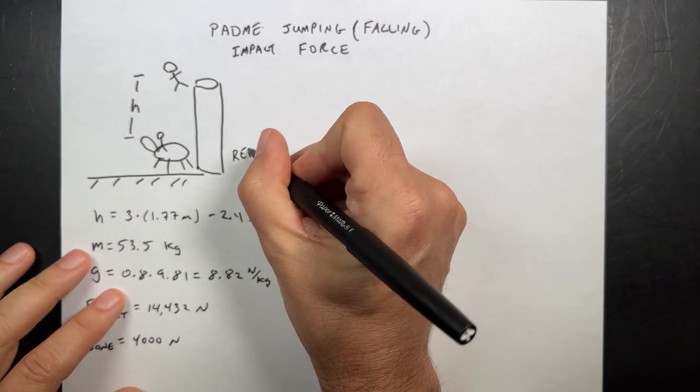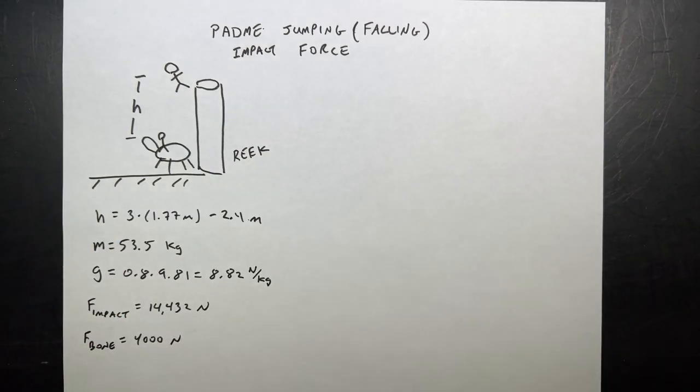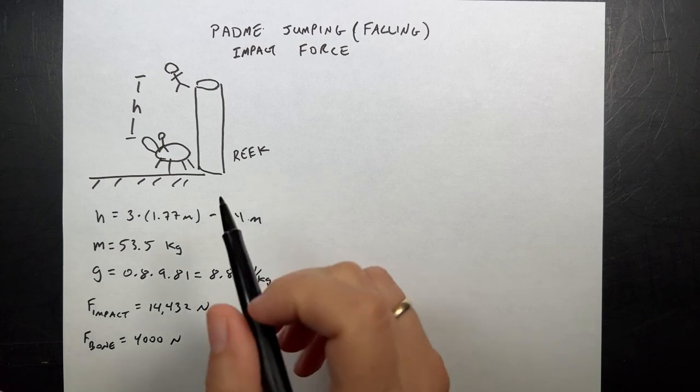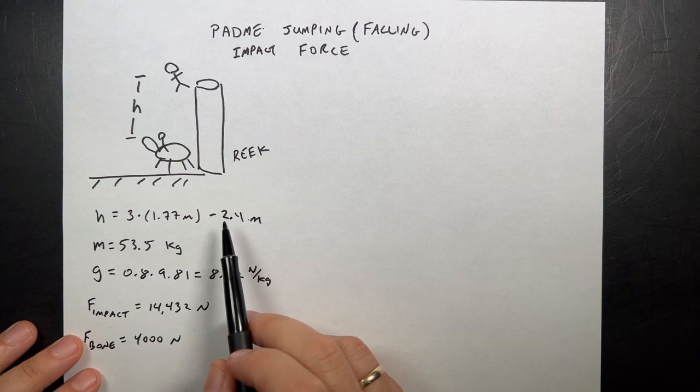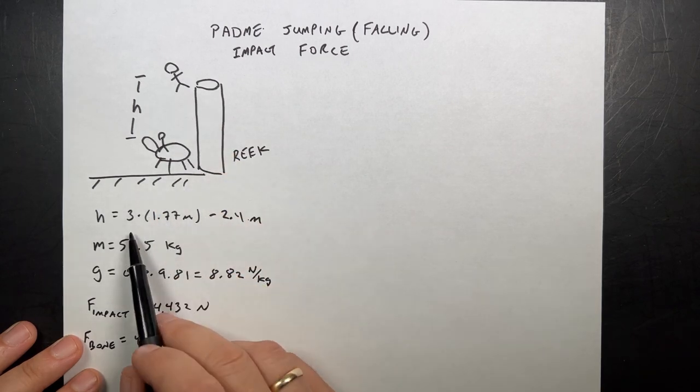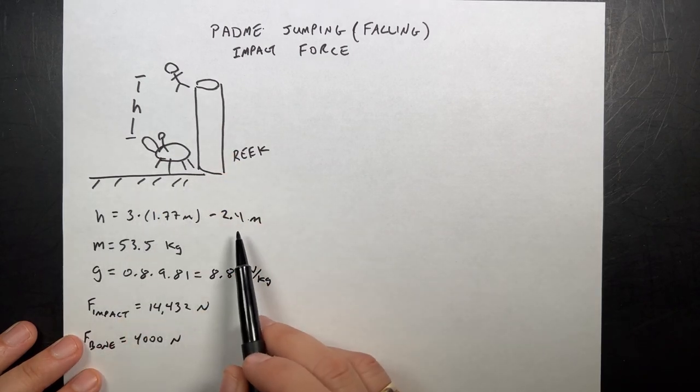And then she subtracted the height of this animal, which apparently is called a reek. And I looked it up on Wikipedia. I don't normally like to look up things like that because I like to figure out the numbers myself from the video. But, you know, whatever. So I did that. 2.4 meters seems kind of tall, but okay. I'm going to go with that. So that's the total distance she dropped: three Obi-Wans minus one reek.